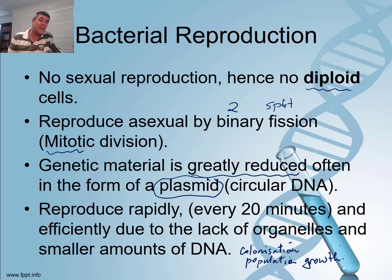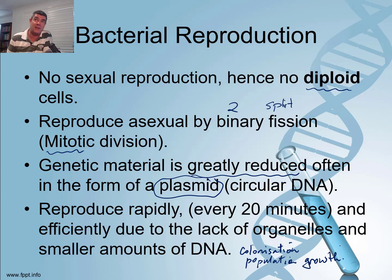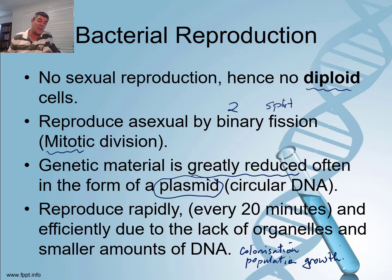The advantages are that some bacteria — for example E. coli, Escherichia coli, which live in the gut of many mammals — are capable of reproducing in around 20 minutes. So their cycles are very, very quick.